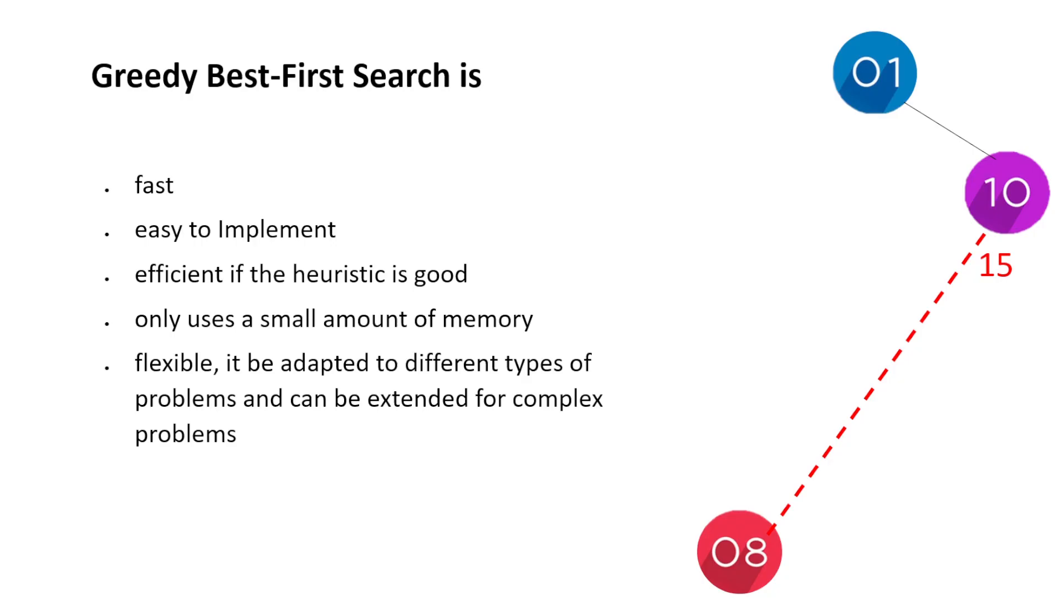Now what's good about the greedy best-first search? Well, it's fast, it's easy to implement, if the heuristic's good it's sufficient, doesn't really use much memory, and you can change it to different things depending on what problem you're trying to solve.